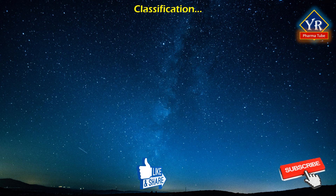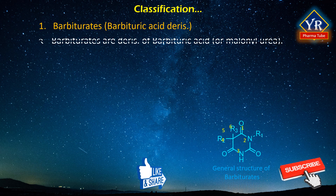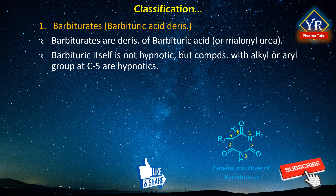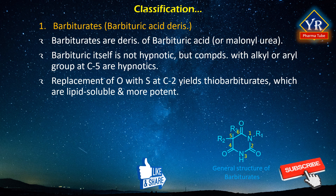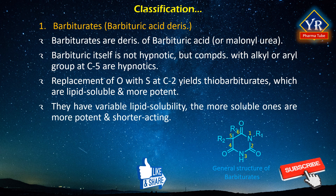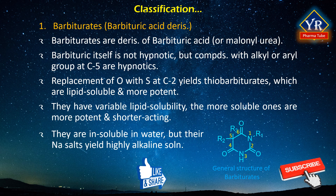Coming to the first class of sedatives and hypnotics: barbiturates. Barbiturates are substituted derivatives of barbituric acid, or malonylurea. Barbituric acid as such is not hypnotic, but compounds with alkyl or aryl substitution at the C5 position are hypnotics. Replacement of oxygen with sulfur at C2 yields thiobarbiturates, which are more lipid soluble and more potent. They have variable lipid solubility — the more soluble ones are more potent and shorter-acting drugs. They are insoluble in water, but their sodium salts dissolve, yielding a highly alkaline solution.